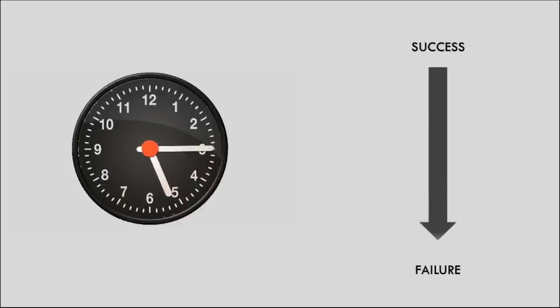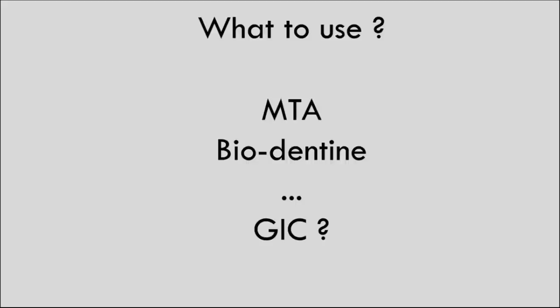But what material needs to be used to seal the perforation? MTA, biodentine and similar materials are the material of choice for sealing perforations. But in case they are not available, at least seal with glass ionomer cement. If we compare immediate sealing with GIC and delayed sealing with a better material like MTA, immediate sealing with GIC would give more success. One ideal practice is, if you are planning to seal a perforation, try to finish cleaning, shaping and obturation and then seal the perforation in the same appointment. This will prevent the sealing material entering inside the root canals, thus blocking the orifice for further continuing root canal treatment.